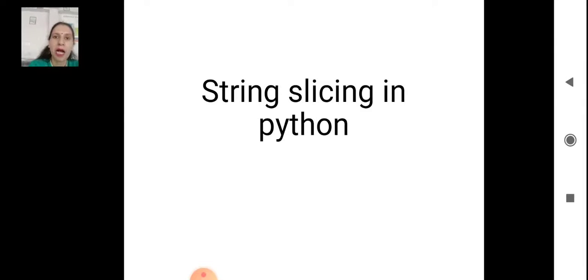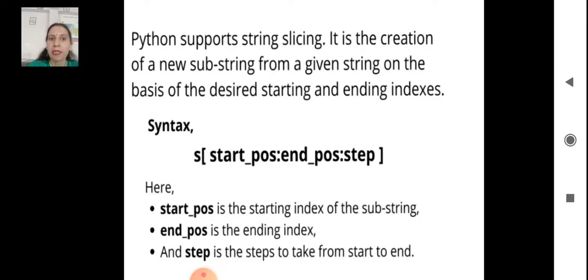Slicing means getting a new substring from a string. Python supports string slicing, which is the process of creating a new substring from a given string on the basis of the desired starting and ending indexes.